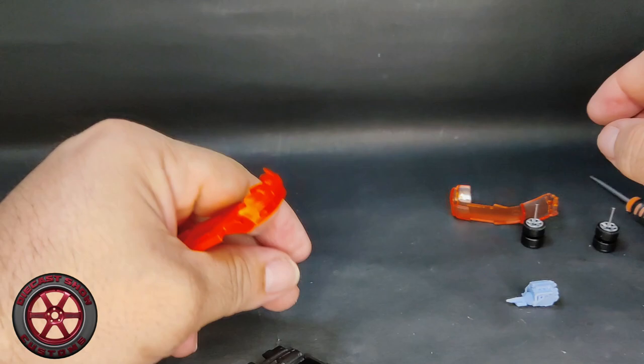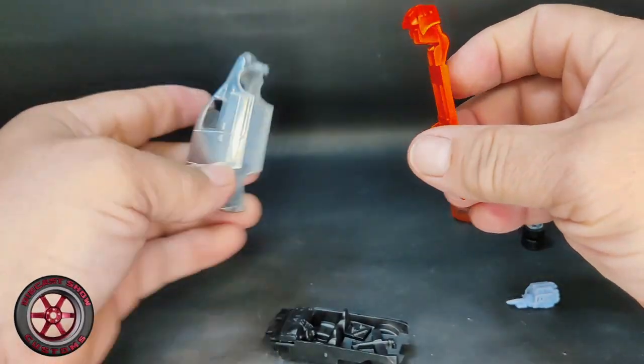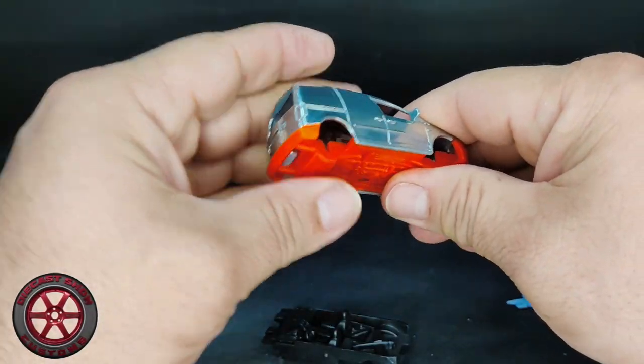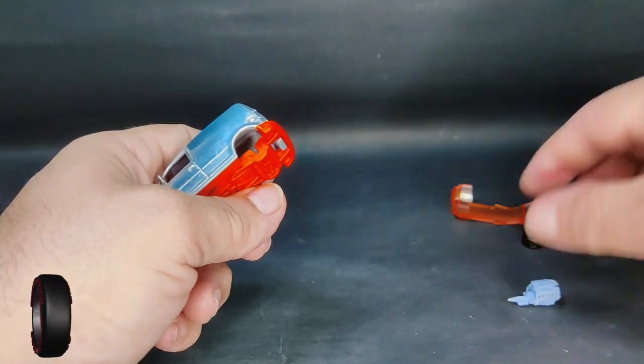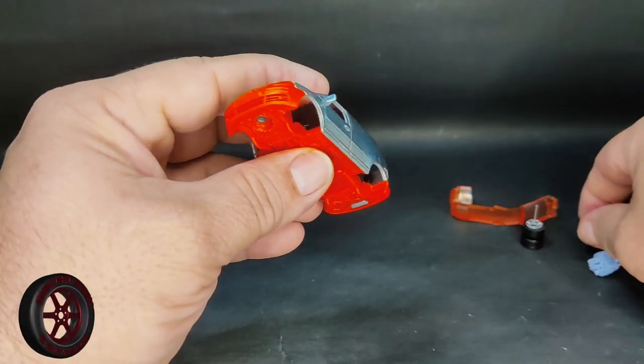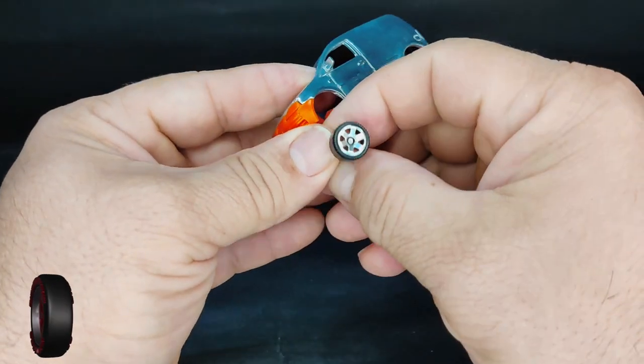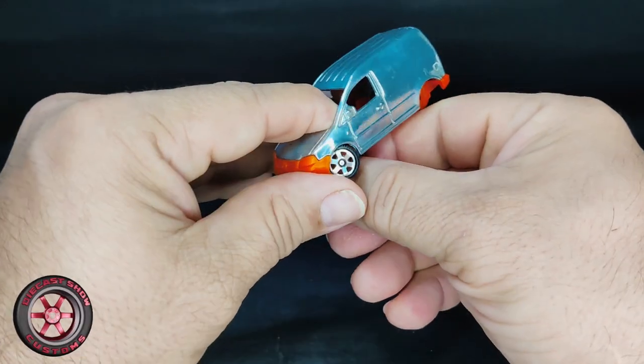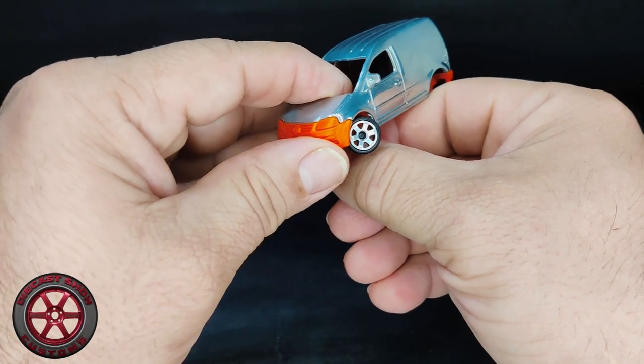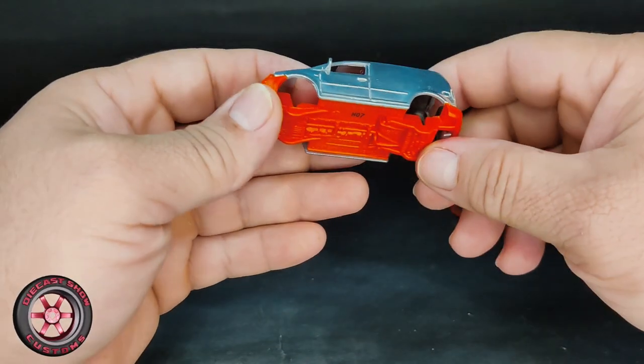I think like six years ago, if you check my Instagram feed, I made a Mustang with steering. That was way before 3D printing was available to us. I want to do something similar with this just for the front, because cars look so much better when you take a picture and the wheel is turned like this.